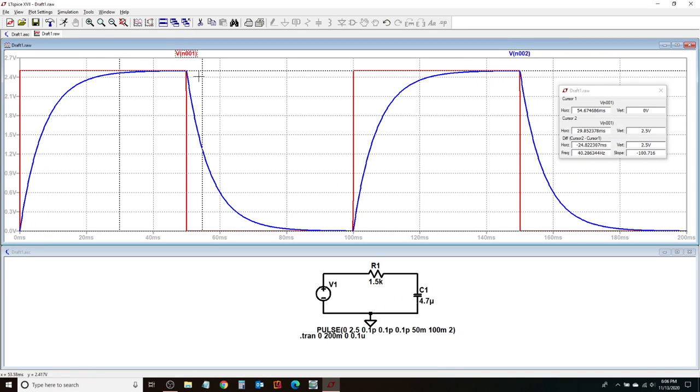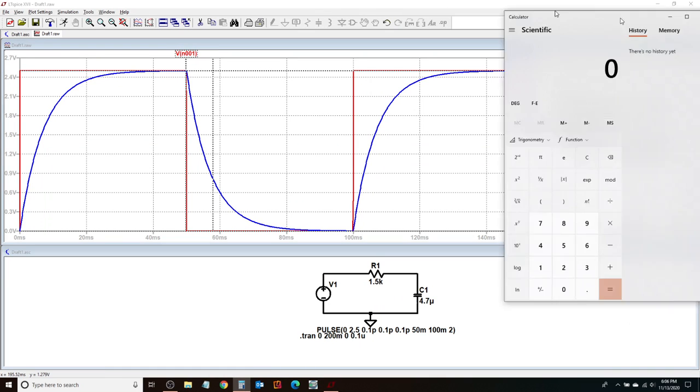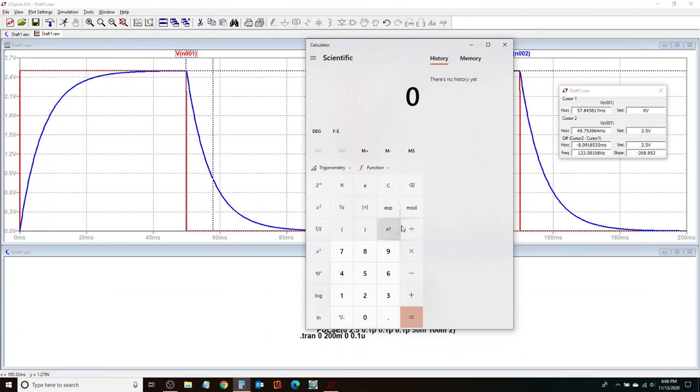And I can bring in my cursor one, maybe somewhere close to where I would expect the time constant measurement to be. So cursor two, I'll move it right at the top here, very close to 50 milliseconds, that's when my capacitor starts to discharge.